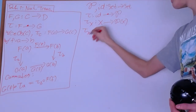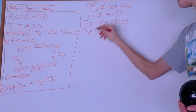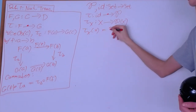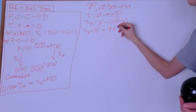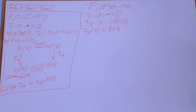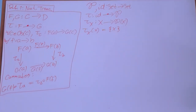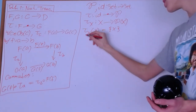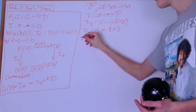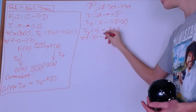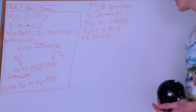So tau X applied to some element x of X will create the set {x}, which is a subset of X and therefore in the power set of X. Now we need to verify the naturality condition for arrows. For an arrow f from X to Y, the diagram looks like this: F is the identity, so the identity applied to X is X, and the identity applied to Y is Y.